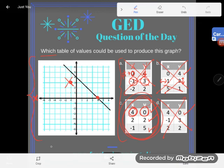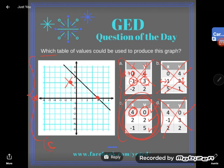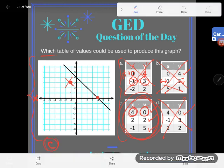This is definitely C, and I proved it to myself by ruling out all the others. So which table of values could be used to produce this graph? That would be C. Great. If you have any questions about this or any other GED concept, be sure to drop it in the comments and I'll do my best to answer it.